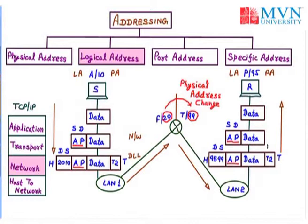We also call the logical address the IP address. The physical address changes with every router — from 20 and 10 when sending to LAN 1, to 95 and 99 when going from LAN 2 to the receiver. The logical address, however, always remains the same, following a universal standard. So that is all about the logical address.